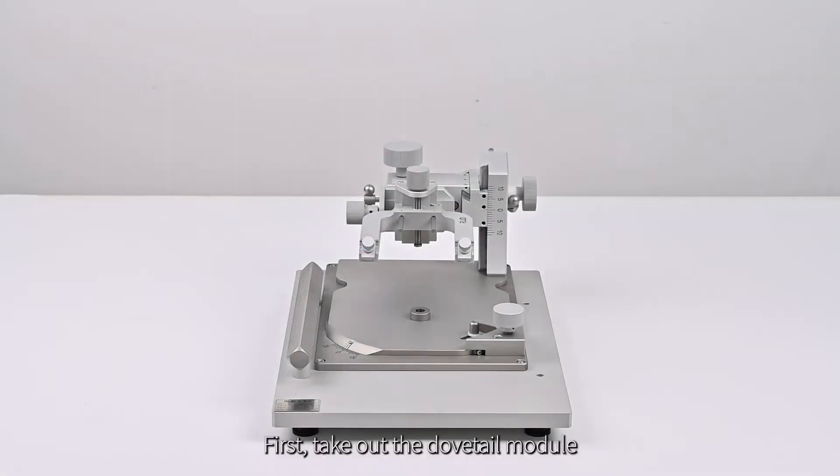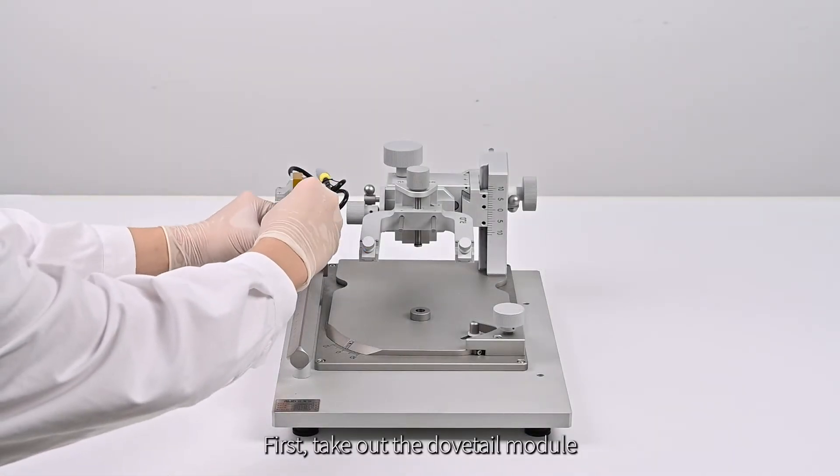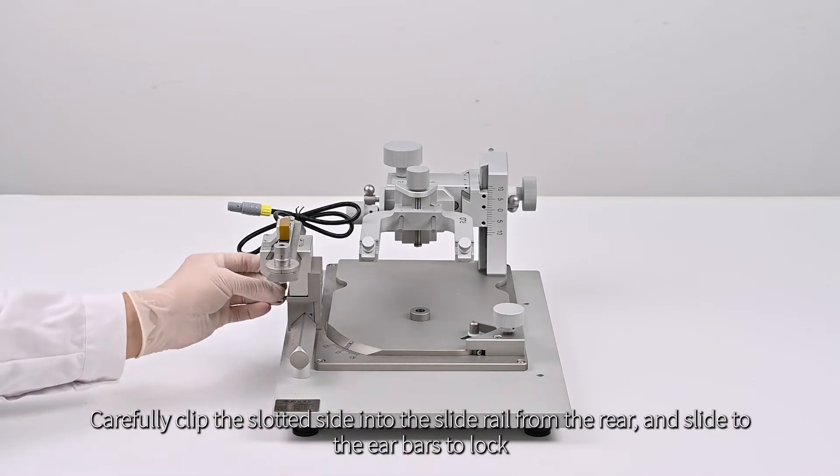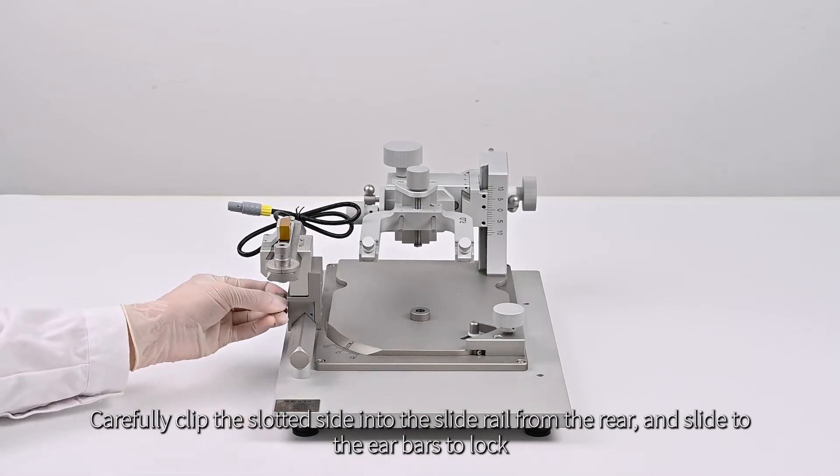Stereotaxic Assemble. First, take out the dovetail module. Carefully clip the slotted side into the slide rail from the rear, and slide to the earbars to lock.